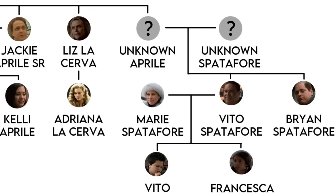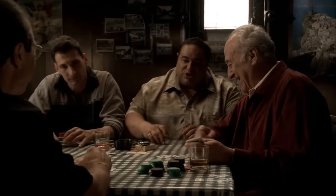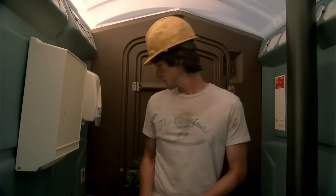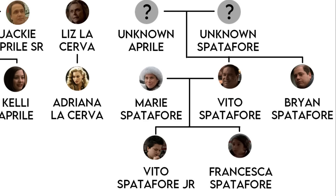Finally, we have an unnamed Aprile who married an unnamed Spadafore. They would have two children: Vito, and Brian, who would later get brain damage from Mustang Sally — Bobby Bacala Sr.'s godson. Vito is a nephew to Richie Aprile. Funny enough, this makes him cousins to Adriana LaServa, which makes his statements about her flirting with him very strange. Vito married Marie and had two children, Vito Jr. and Francesca.